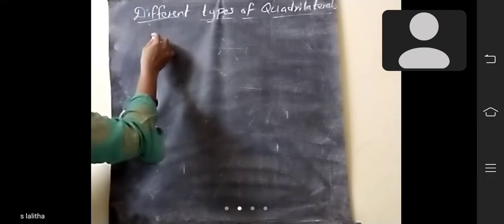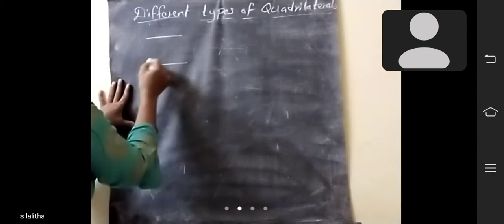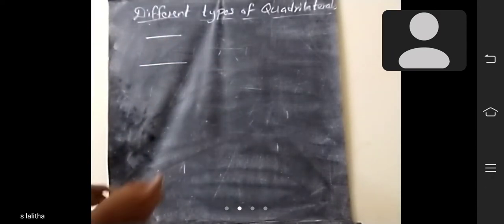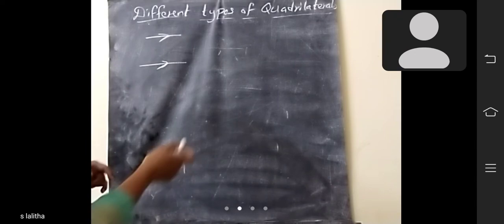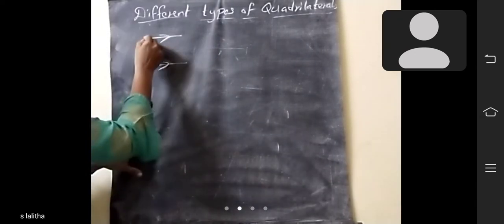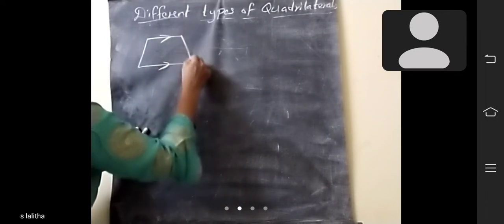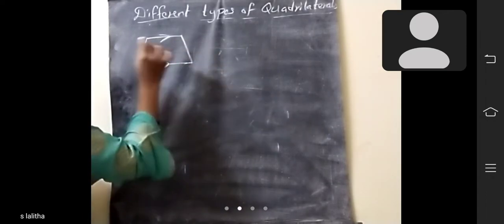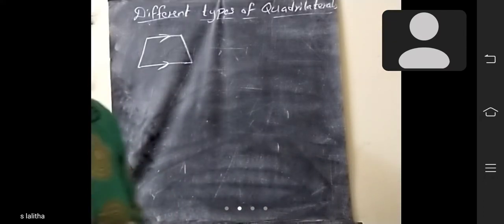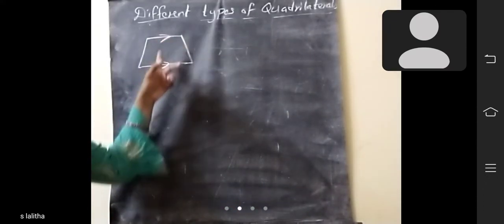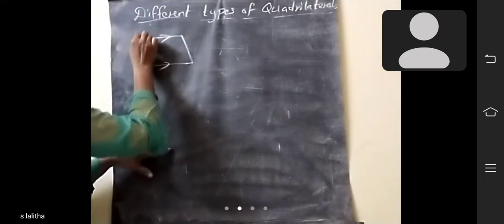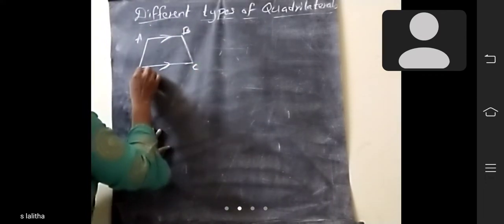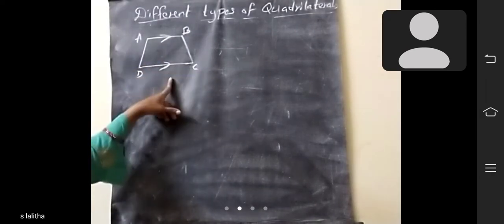Different types of quadrilaterals. First one: here one line and here another line — these two lines are parallel. You know already, parallel means they never join. These two lines are parallel and here it joins, these two lines are not parallel. So this is called trapezium. Trapezium means only one pair of parallel lines. A, B, C, D — one pair of parallel lines is called trapezium.